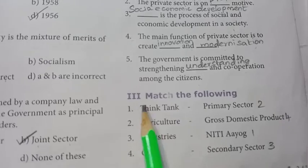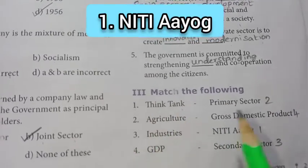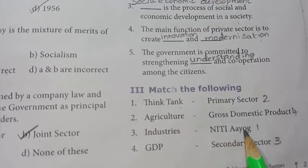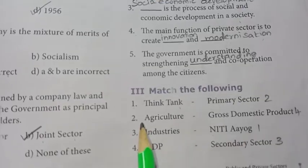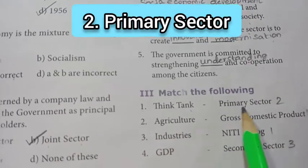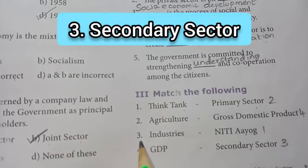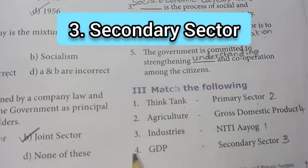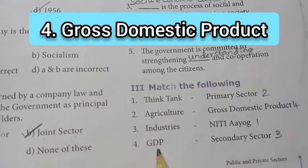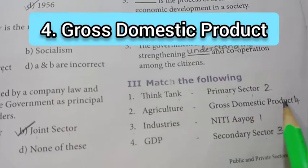Room number 3, match the following. First: think tank — NITI Aayog. Second: agriculture — primary sector. Third: industries — secondary sector. Fourth: GDP — gross domestic product.